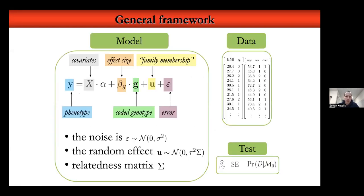Genome-wide association studies are essentially modeling an outcome trait. For example, body mass index is a general measure of obesity — the normal range is between 20 and 25, between 25 and 30 people are classified as overweight, and above 30 as obese. We keep the continuous outcome and model it as a function of various environmental factors — covariates such as age, sex, diet, and physical activity — which impact body mass index.